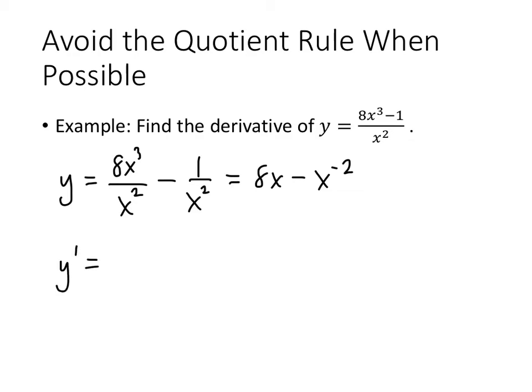y prime, well the derivative of 8x is 8, and the derivative of x to the minus 2 is minus 2 x to the minus 3. I can simplify that a little bit. And we're done. Now that's the answer that we would have gotten from the quotient rule. It might not have looked exactly like that, but it could have been simplified into that. But this way we get the correct answer without having to work so hard.